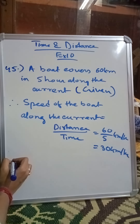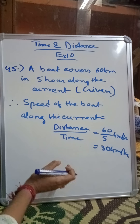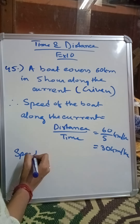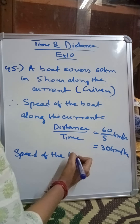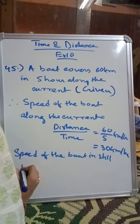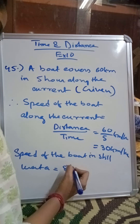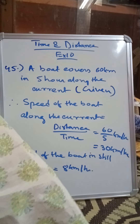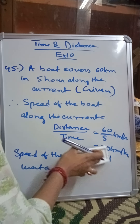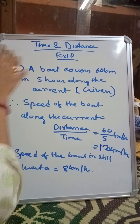We have also been provided with the actual speed of the boat, which means the speed of the boat in still water. The speed of the boat in still water is 8 km per hour. And 60 divided by 5 is 12, so the speed along the current is 12 km per hour.